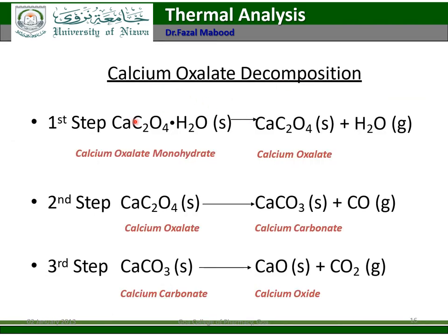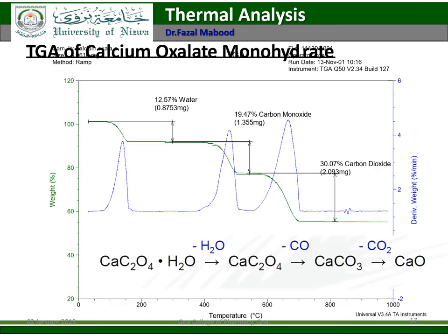Calcium oxalate decomposition occurs in three steps: in the first step, calcium oxalate containing water loses the water; in the second step, calcium oxalate decomposes to calcium carbonate with loss of carbon monoxide; in the third step, calcium carbonate decomposes to calcium oxide with loss of carbon dioxide. The TGA curve shows three weight loss steps corresponding to water, carbon monoxide, and carbon dioxide, along with their corresponding peaks in the derivative curve.